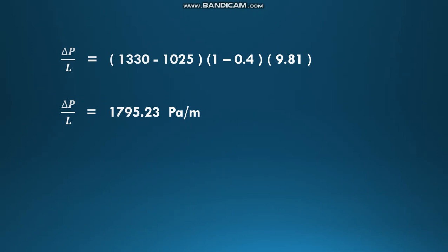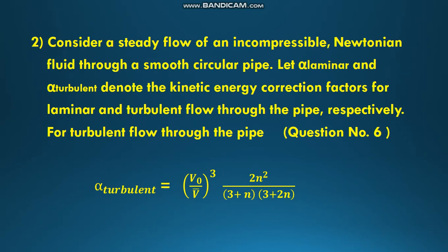The pressure drop per unit length of the bed at the onset of fluidization is 1795.23. We have found the answer with a simple formula.